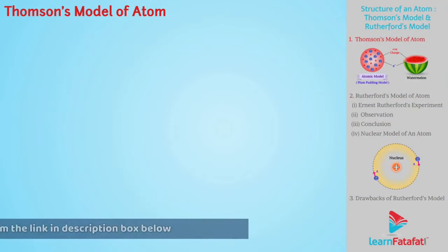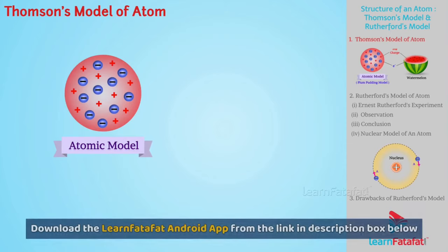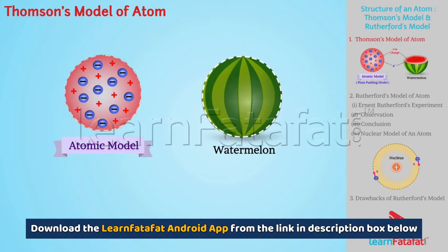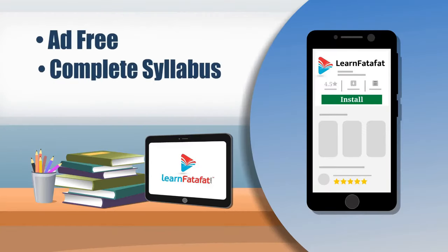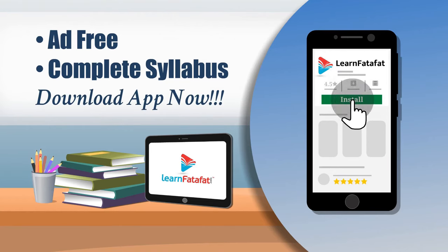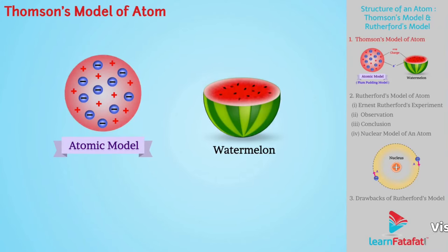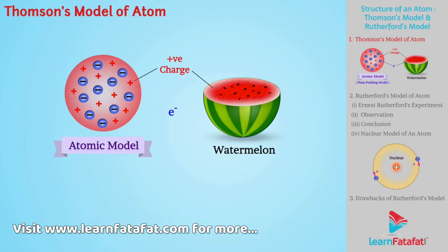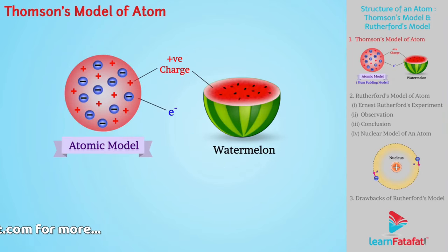Thomson's model of the atom shows similarity with the structure of a watermelon. The sphere of the watermelon is considered to be the atom. The red part of the watermelon is taken as the positive charge spread over the entire surface, whereas electrons are embedded into the positive charge, just like the seeds of the watermelon in the red part. This model is also known as the plum pudding model.